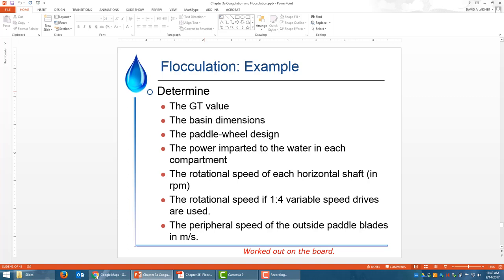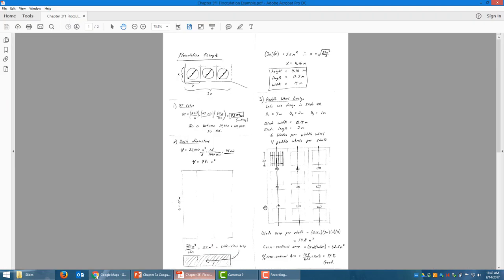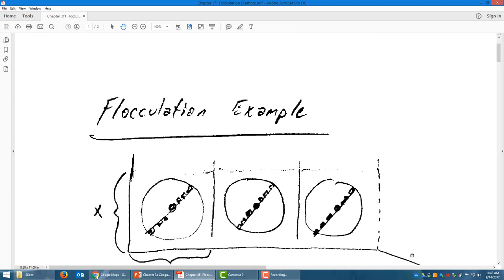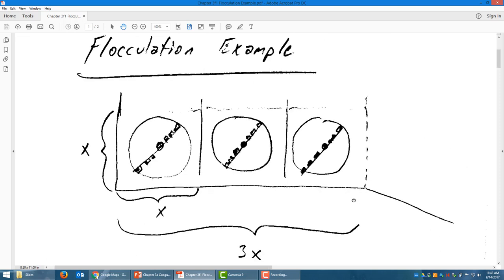The plant was designed the same way as this example problem. What we're asked to do is determine the GT value, basin dimensions, all the way down. So there's seven items here. I've already worked this out and provided to you this PDF. But I'm going to walk you through the PDF and explain what it is that we're doing. This is the side view of those paddles.